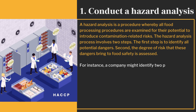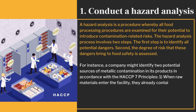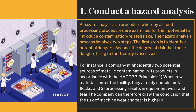For instance, a company might identify two potential sources of metallic contamination in its products in accordance with the HACCP principles. One, when raw materials enter the facility, they already contain metal flecks, and two, processing results in equipment wear and tear. The company can therefore draw the conclusion that the risk of machine wear and tear is higher and the risk of the other is lower.